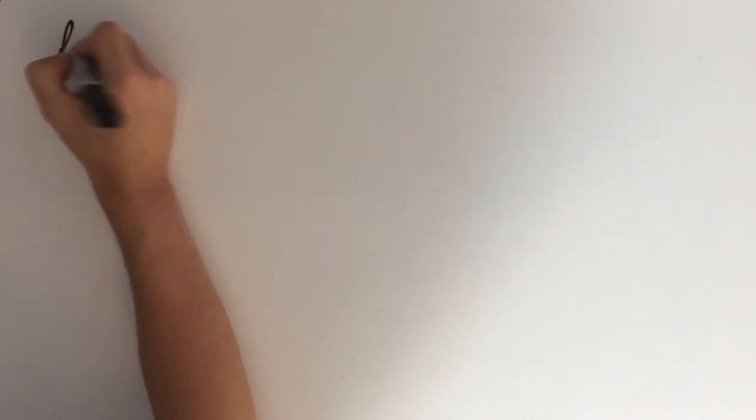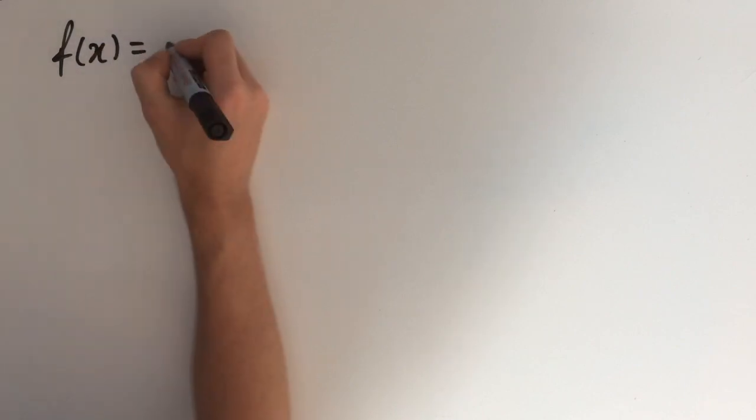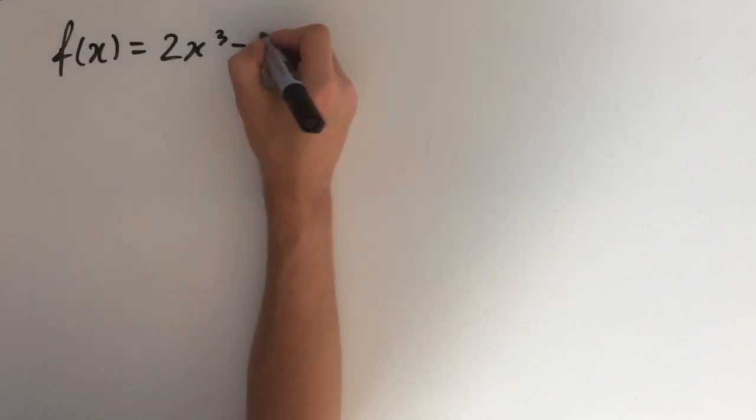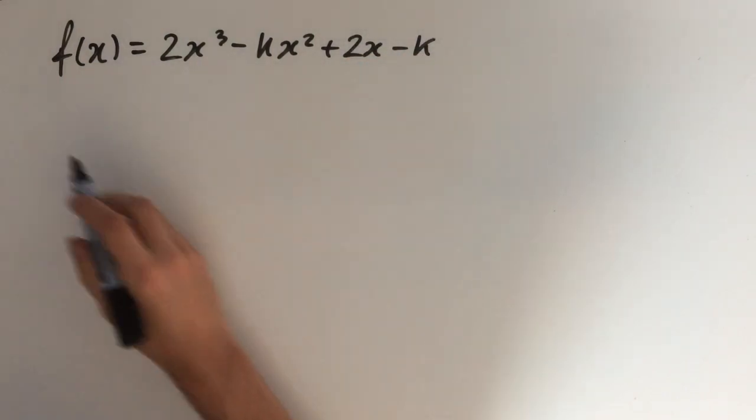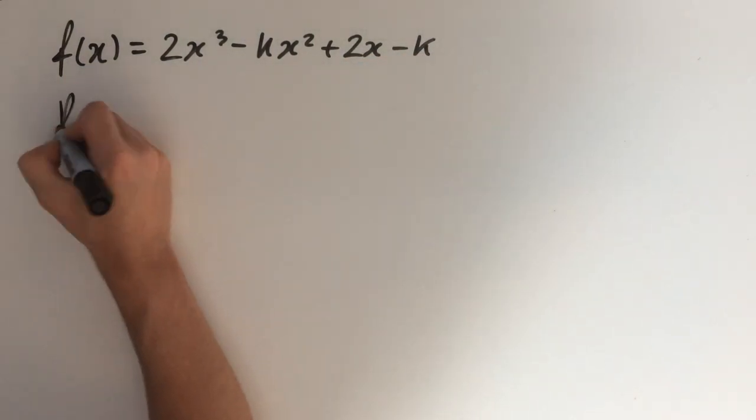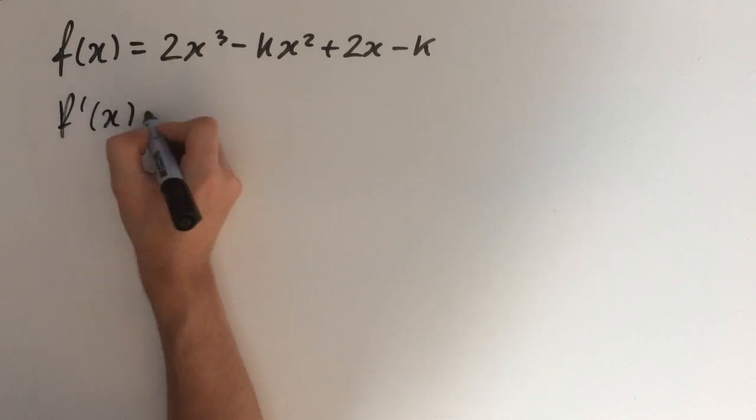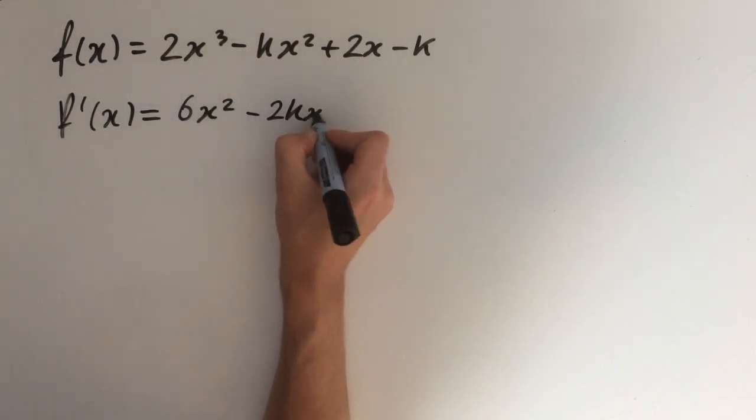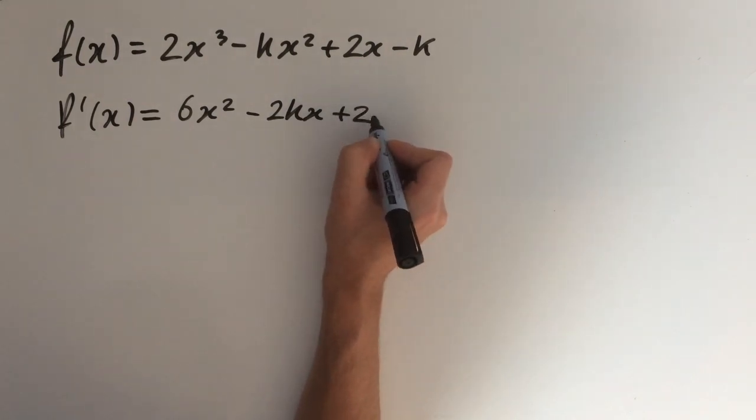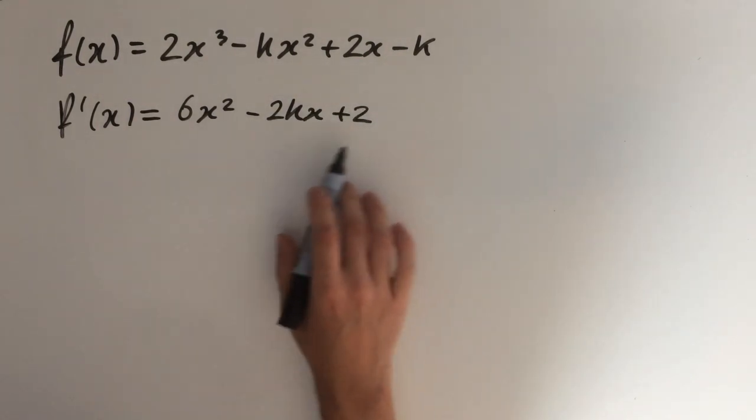Our function is f(x) = 2x³ - kx² + 2x - k, and we want to differentiate this. The derivative will be f'(x) = 6x² - 2kx + 2, and as we said before we want to set this equal to zero.